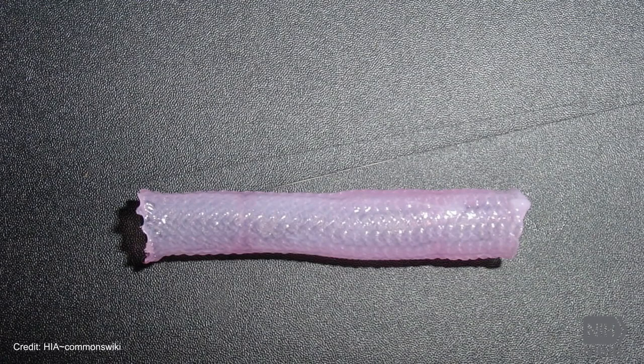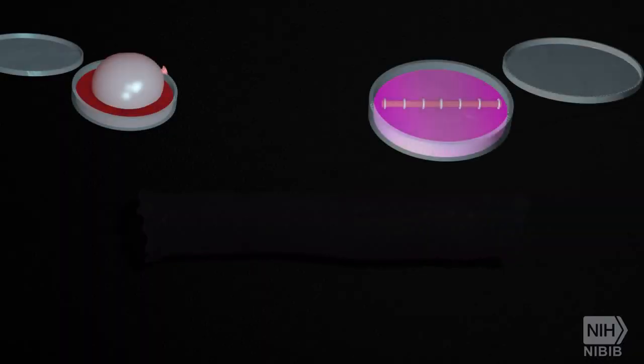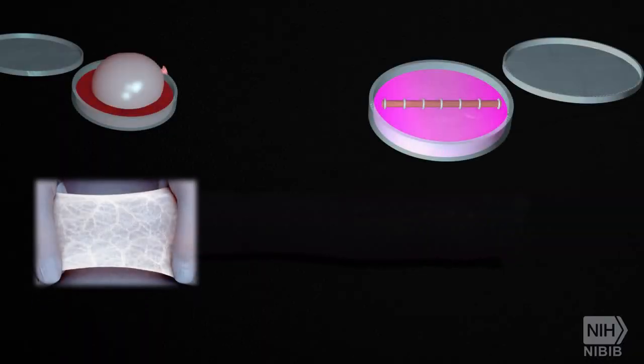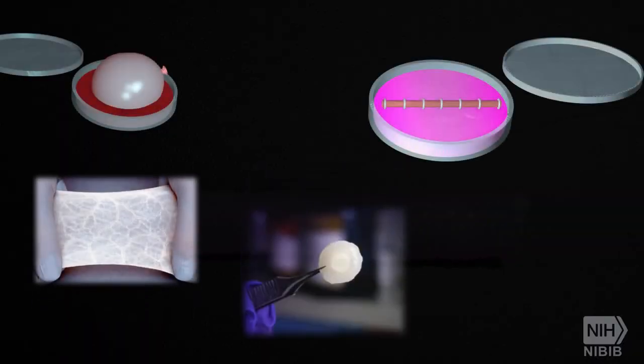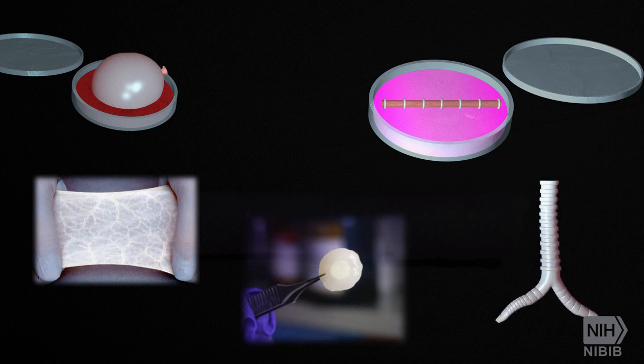Some examples of tissues and organs that have already been successfully tissue engineered and implanted in humans include bladders, small arteries, skin grafts, cartilage, and even a full trachea.